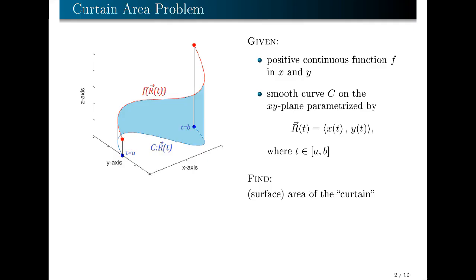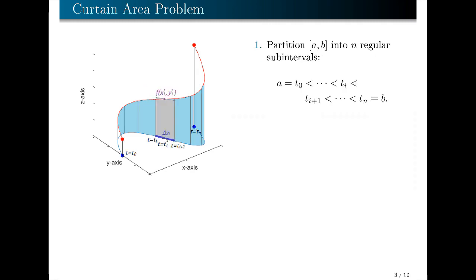What we want to find now is the surface area of this curtain. To find the area of this curtain, we will employ the usual steps in coming up with a definite integral. To recall those steps, I usually think of three words: partition, approximate, and sum.